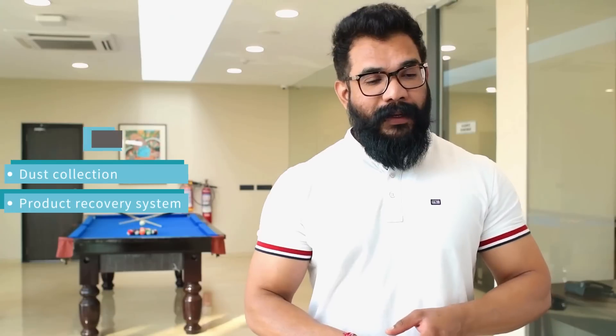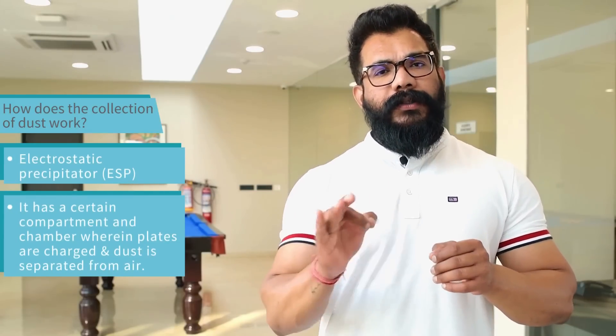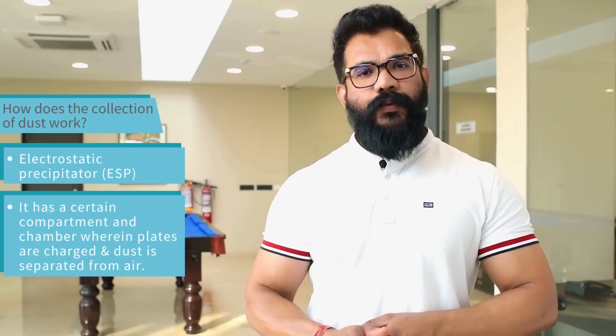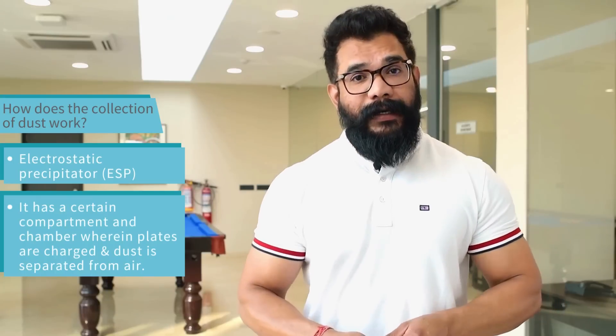As we discussed in our previous episode, the two systems are dust collection and product recovery. To design these two systems, broadly there are two classifications. Certain industries are more inclined towards a system called ESP — electrostatic precipitator — wherein you have compartment chambers that are charged positively to collect dust.